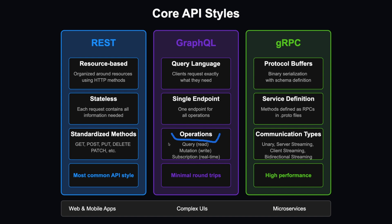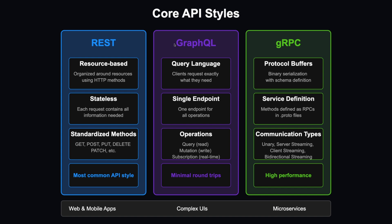In GraphQL, operations are called QUERY when retrieving data or MUTATION when updating data — the equivalent of PUT, PATCH, or POST in RESTful APIs. There is also a SUBSCRIPTION operation for real-time communication. A key advantage of GraphQL is minimal round trips: data that would require three separate REST requests can be fetched in a single GraphQL request.